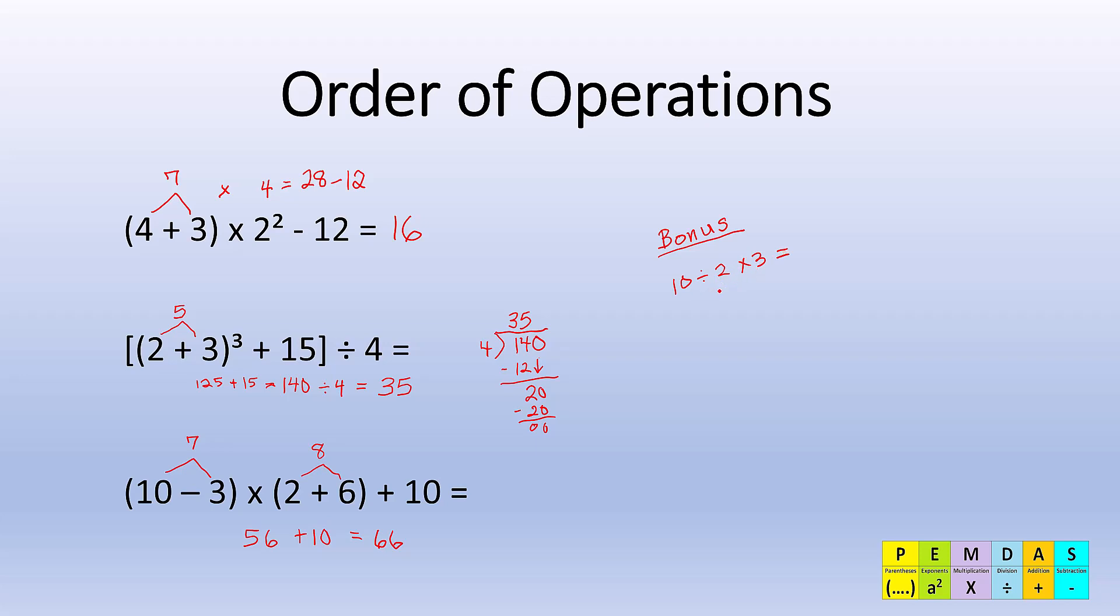So 10 divided by 2 would give me 5, and then 5 times 3 would give me 15.